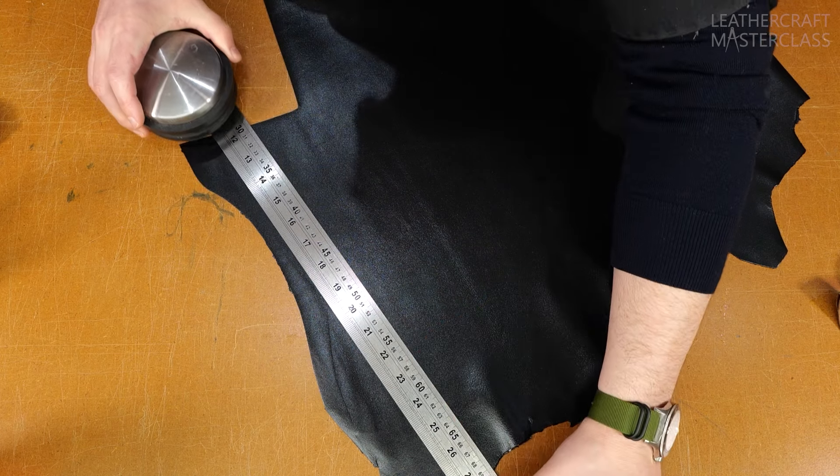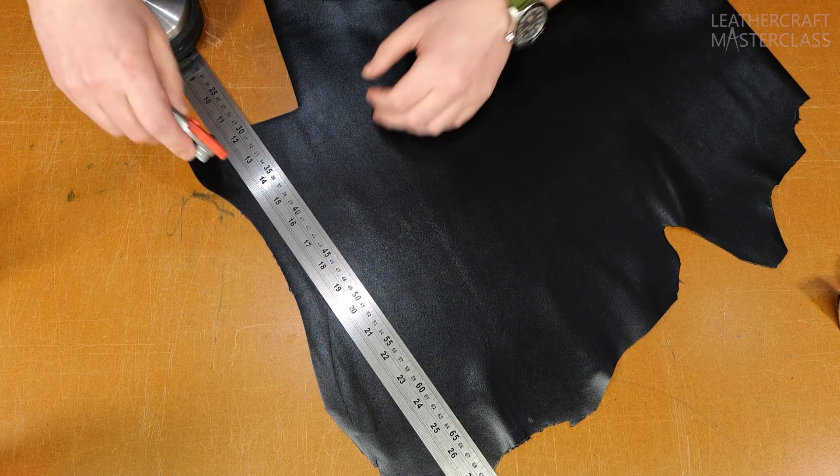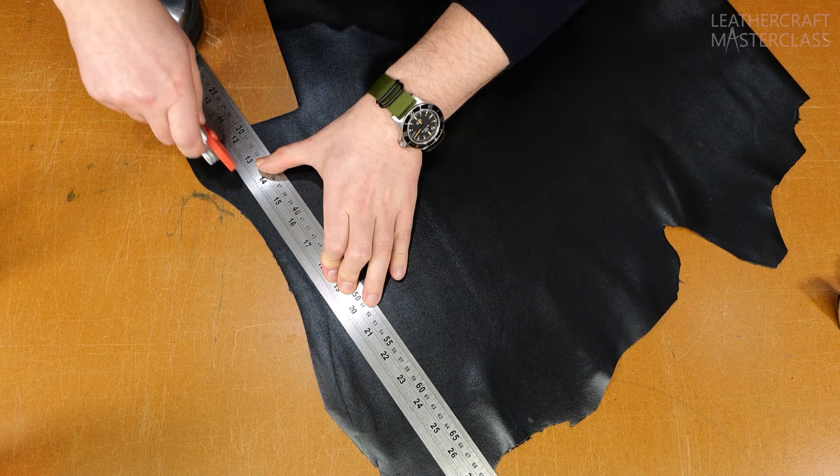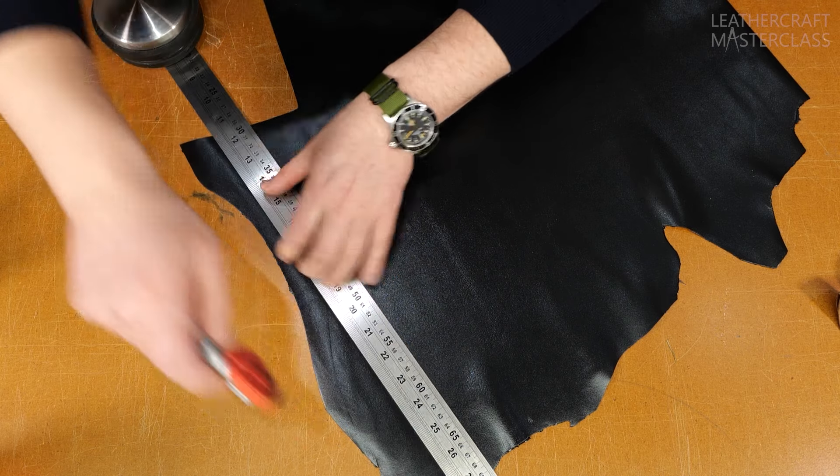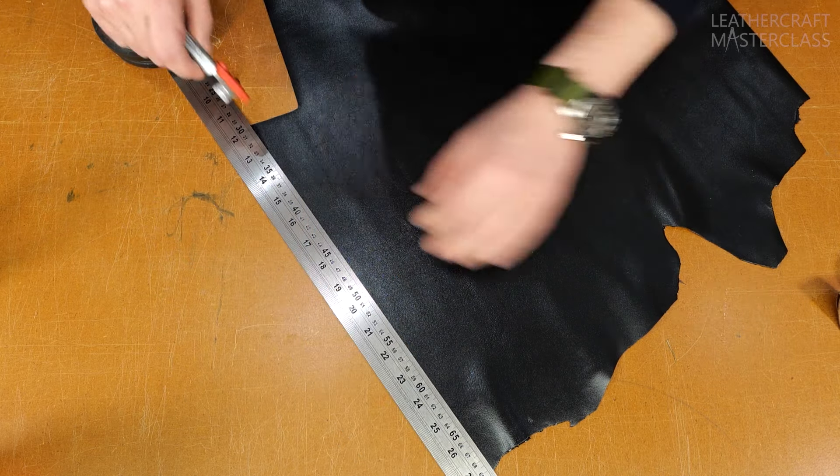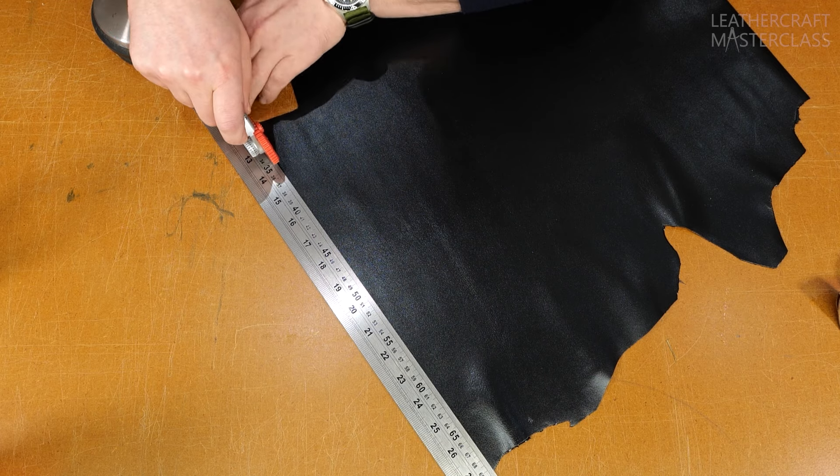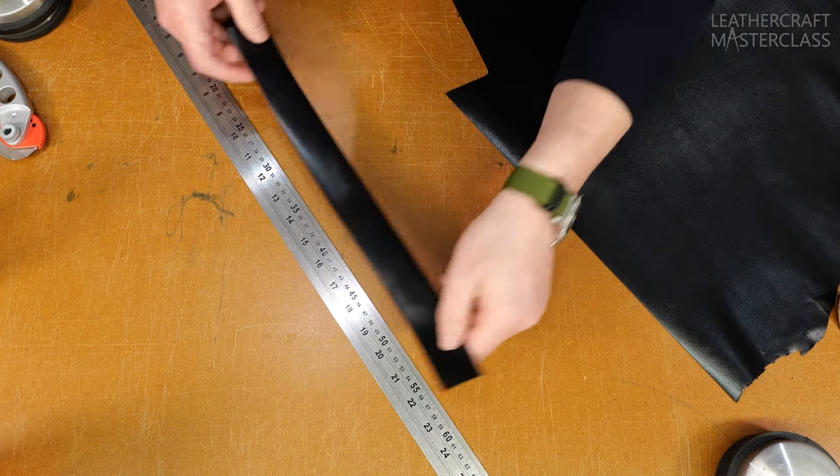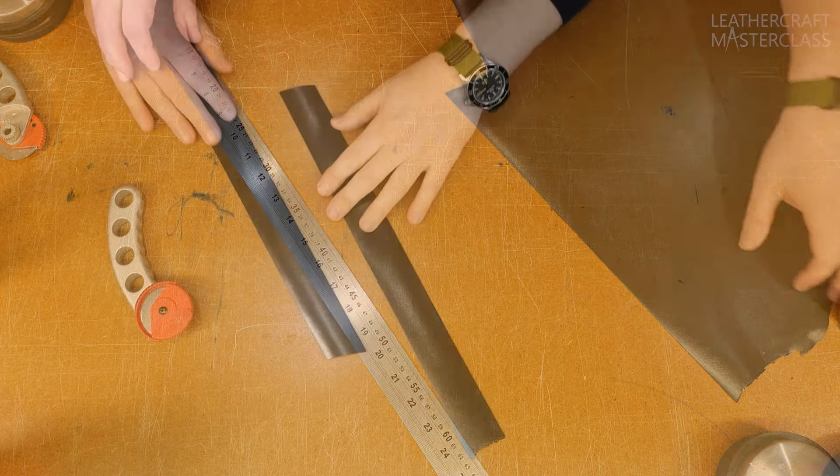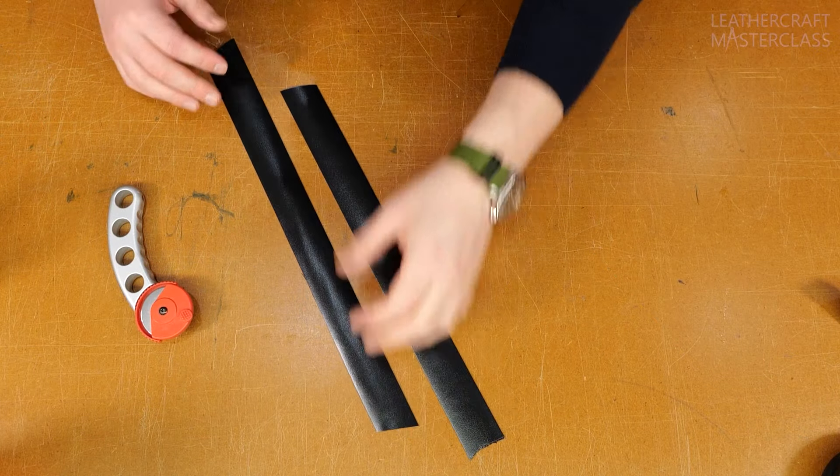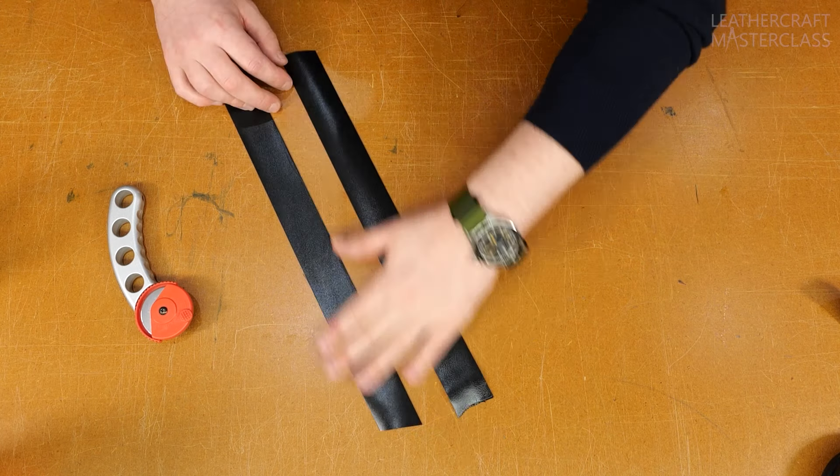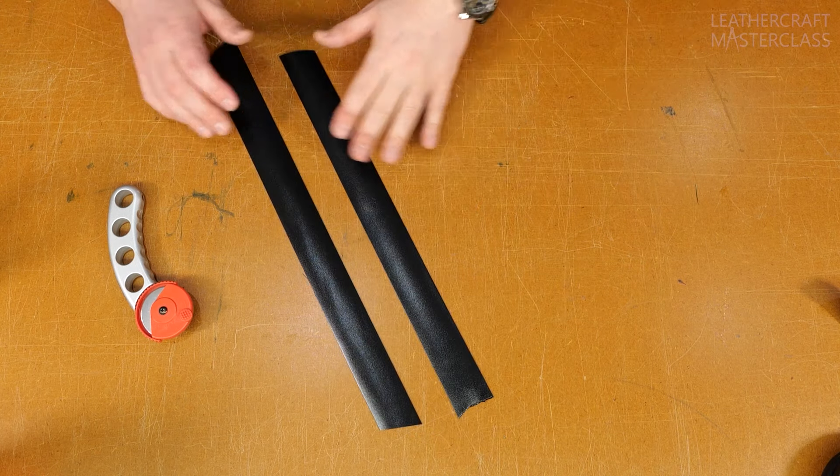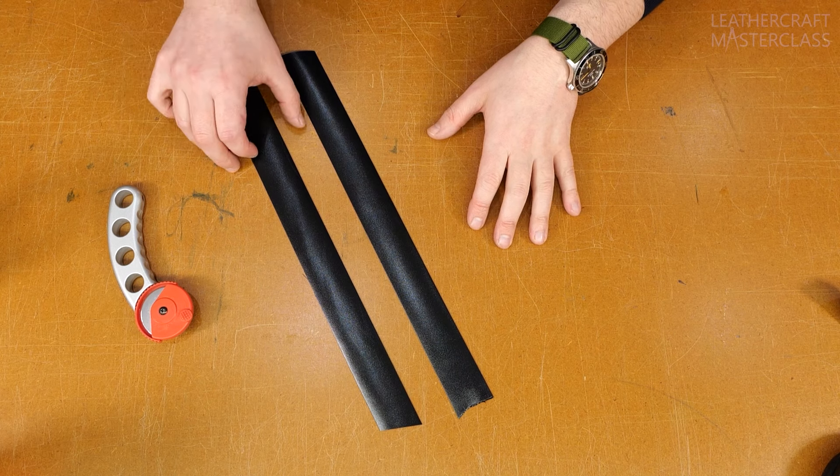Place down a couple pattern weights. And then just using a rotary cutter, you can zip along one side and zip along the other. So we have one piece, put that to the side. So now we have two pieces, both wider and longer than we actually need. I'm going to zip these through the Bell Knife Skiver machine just to thin them down.